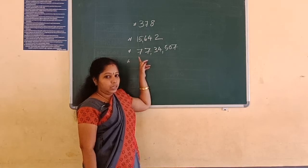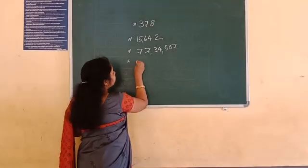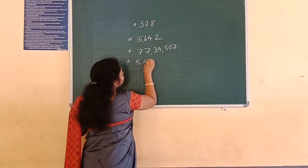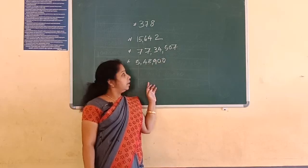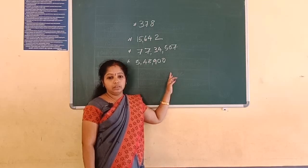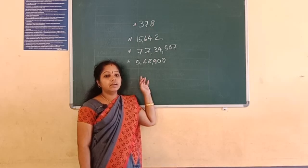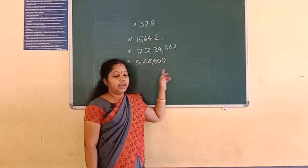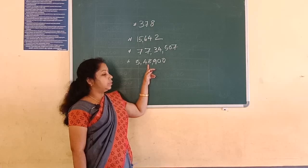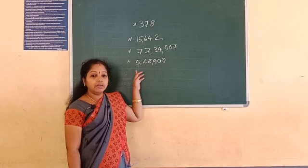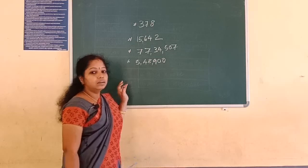How can you read this number? 5 lakhs, 48,900. 2 lakhs, between 1 lakh and 10 lakhs. 5 lakhs, 48,900. Clear? 5 lakhs, 48,900.